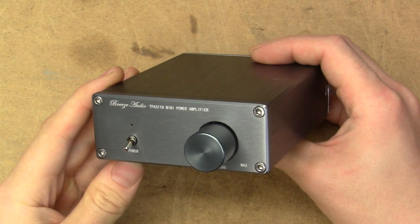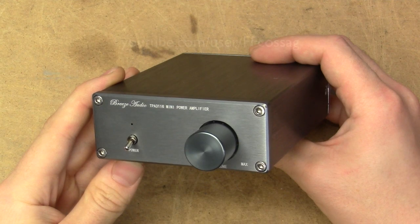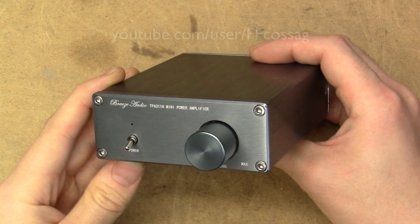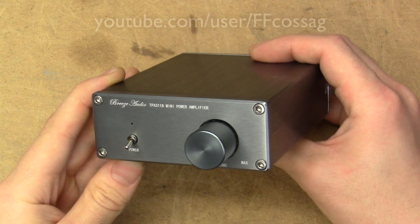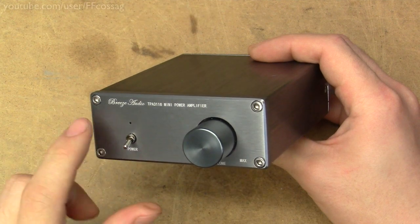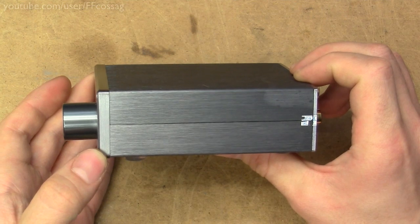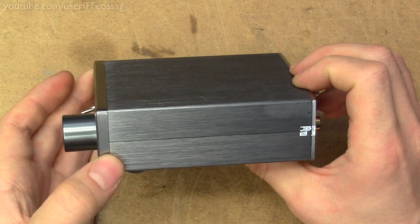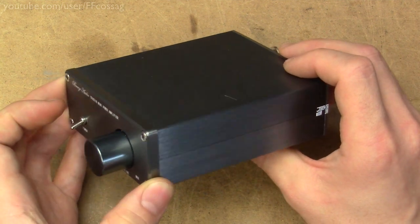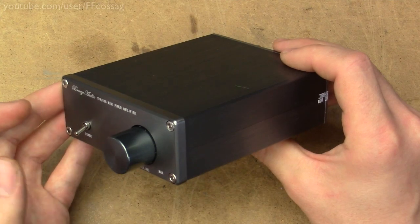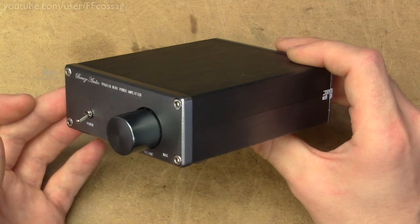This is the Breeze Audio TPA3116 Mini Power Amplifier, which I purchased off AliExpress for about $24. They don't seem to be available at that price at the time of shooting this video, but the Breeze Audio thing seems to be referring mostly to this case. This really seems to be a new up and coming thing among Chinese mini-amp manufacturers, because you can get this in many varying varieties. You can even just purchase the vanilla case for the same price I paid for the entire thing.